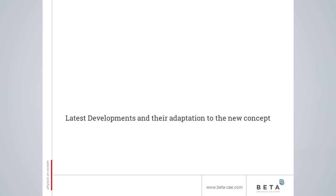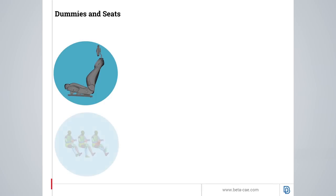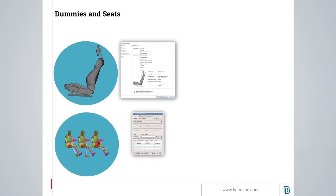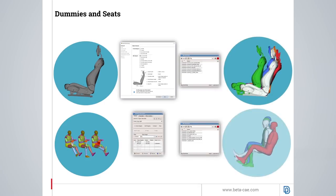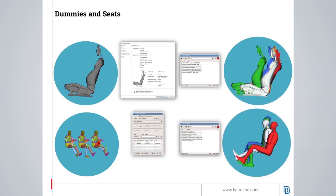Regarding the latest developments and their adaptation to the new concept that was presented previously, starting from seats and dummies, there are tools such as the seat positioning and dummy tool which are able to create and save various positions for the seat and dummy that can be utilized by the model browser. A list of available saved positions can be selected in order to be implemented on a specific simulation run.